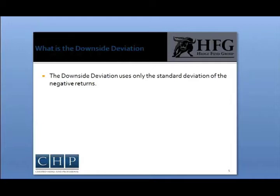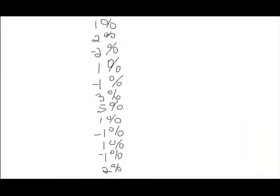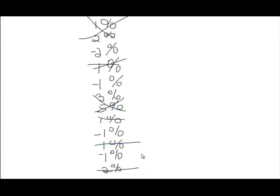For example, if I had a portfolio of returns for 12 months, I would only be using the negative returns, so the positive returns would be eliminated from my evaluation of volatility used in the denominator of this formula.